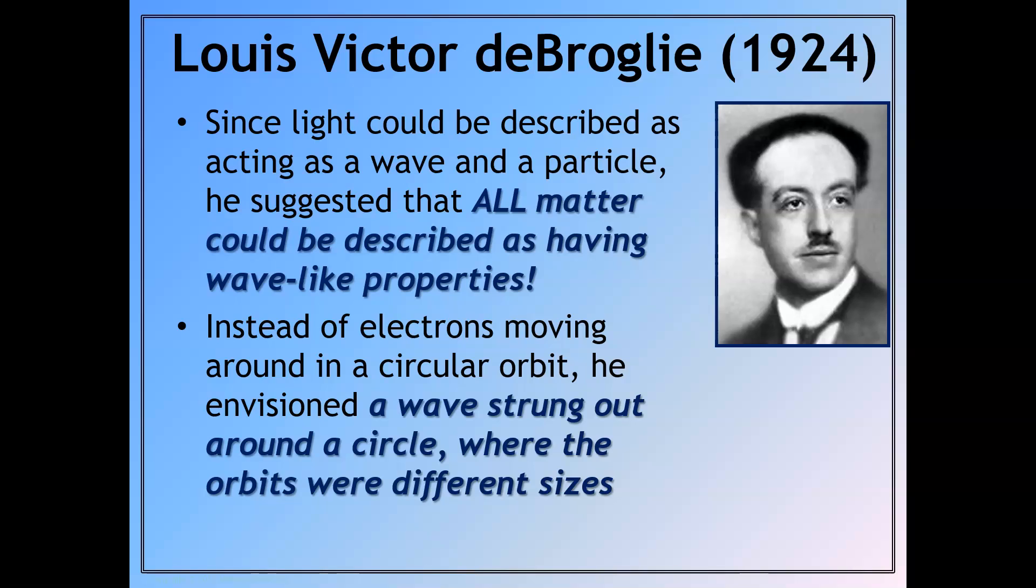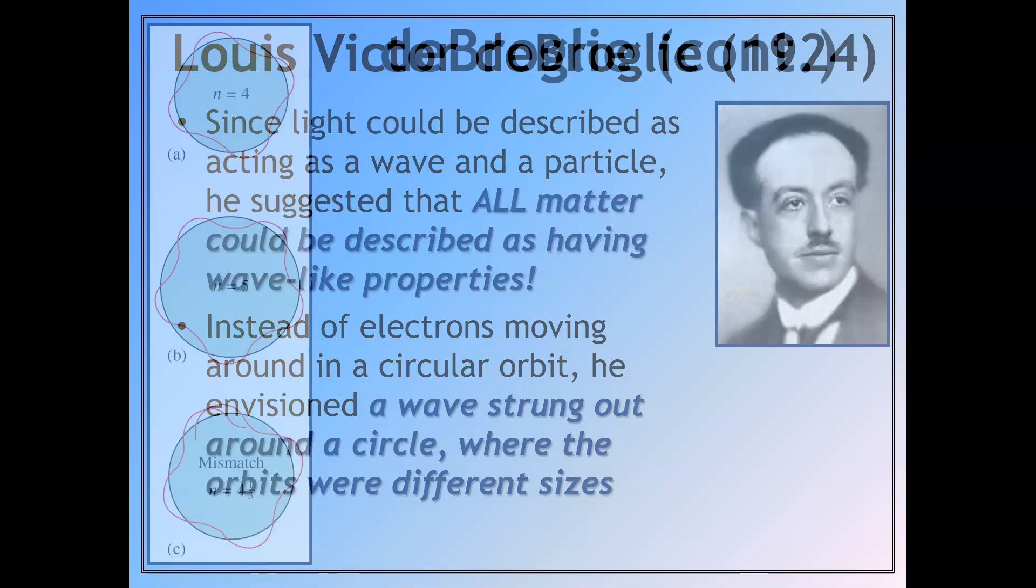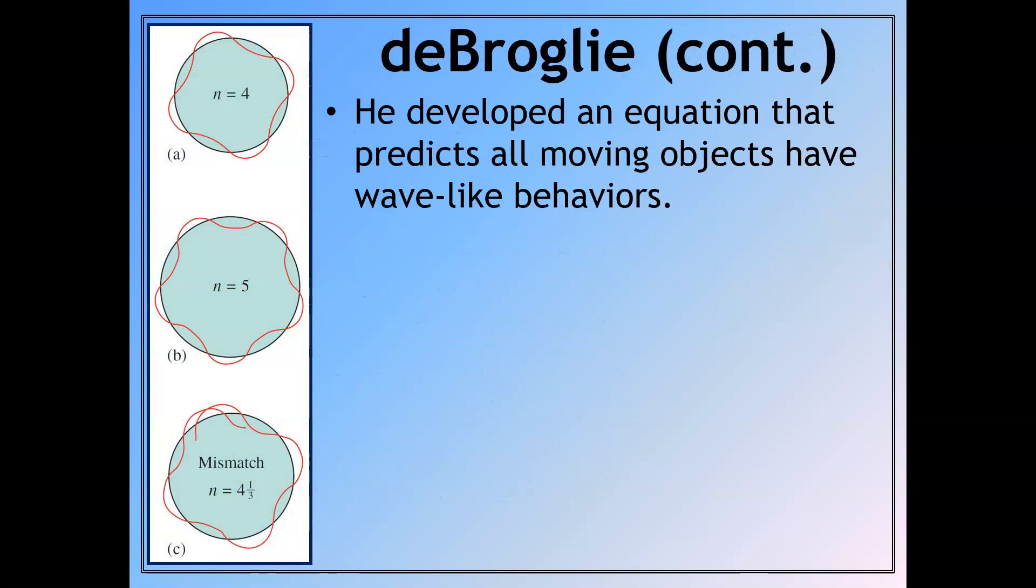And so instead of electrons moving around in a circular orbit, he envisioned these electrons as acting as a wave strung out around a circle where the orbits were different sizes. And so he developed an equation that predicts all moving objects have wave-like behaviors. Pretty amazing stuff.